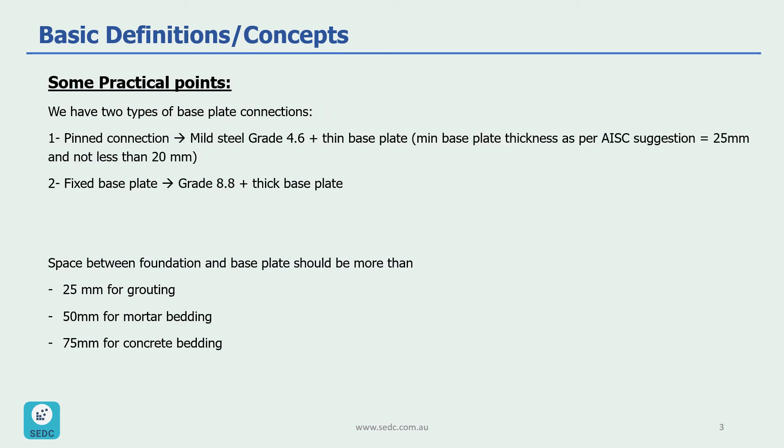We have two types of base plate connections. The first one is pin connection and for this connection we usually use mild steel grade 4.6 bolts plus thin base plate. Minimum base plate thickness as per AISC suggestion is 25mm and not less than 20mm. For fixed base plate we can use grade 8.8 bolts and a thick base plate.